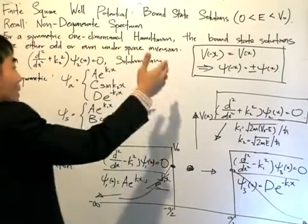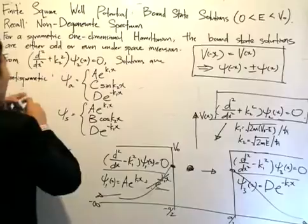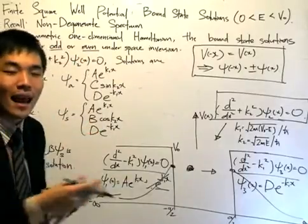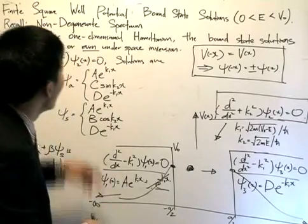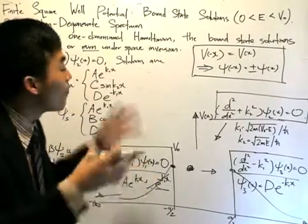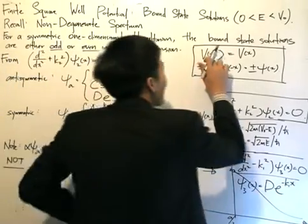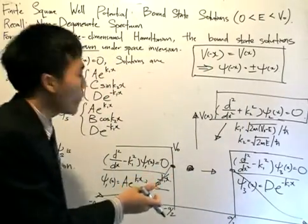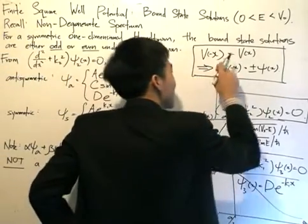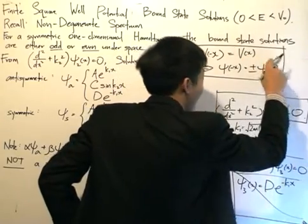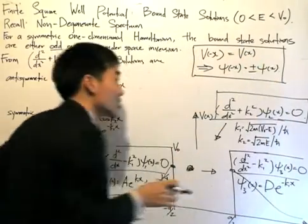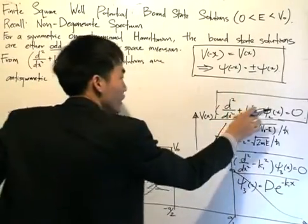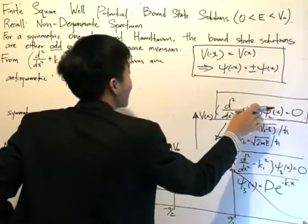Since the Hamiltonian is symmetric and is one-dimensional, the bound state solutions are either odd or even under space inversion. Space inversion here refers to the x dimension. If V(-x) = V(x), which is exactly the case we have, it implies that psi(-x) equals plus or minus psi(x). This tells us the function psi is actually even or odd, and this applies to psi_2.